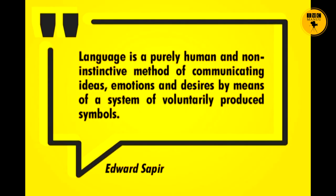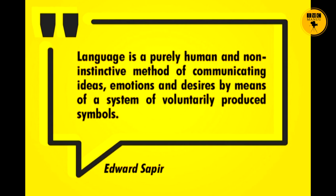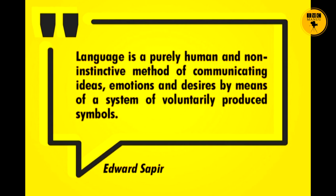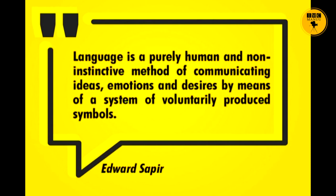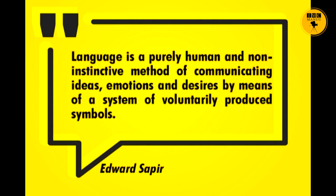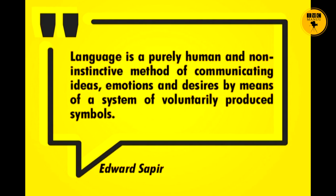Let's see some definitions of language. According to Edward Sapir, language is a purely human and non-instinctive method of communicating ideas, emotions, and desires by means of a system of voluntarily produced symbols. Instinct means an inborn pattern of behavior. So Sapir wants to say that language is purely human but not an inborn behavior — it is a method of communicating ideas, emotions, and desires.